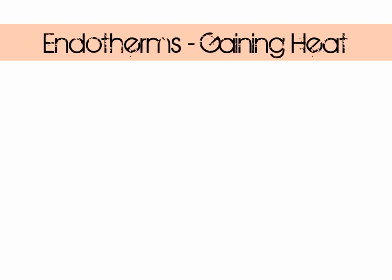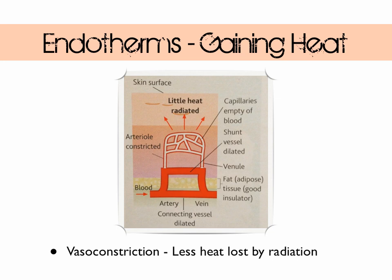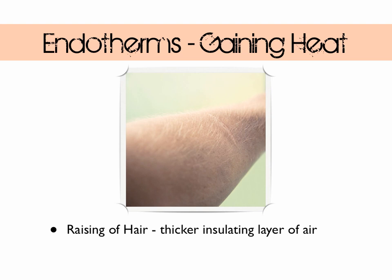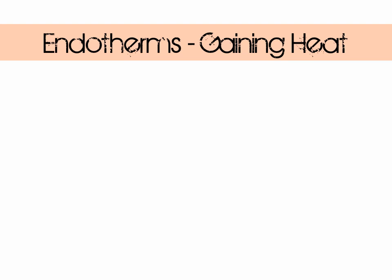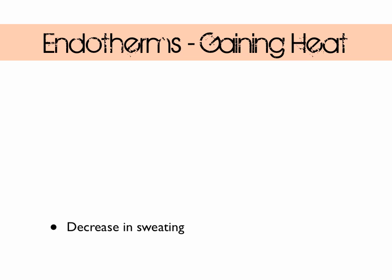So how do endotherms gain heat in cooler environments? The first method is vasoconstriction — they constrict blood vessels near the surface of the skin. This maintains blood flow to the vital organs and reduces blood flow to the skin, so less heat is lost to the environment via radiation. This is done by narrowing the arteriole near the skin surface using a small sphincter muscle and opening a shunt vessel, which is like a shortcut for the blood. Endotherms also shiver — these involuntary muscle contractions generate heat. Hairs will also rise, which traps a layer of insulating air between the skin and the environment. Metabolic rate can also be raised by speeding up reactions such as respiration within the body, producing heat as a byproduct. And when trying to gain heat, we also sweat less.